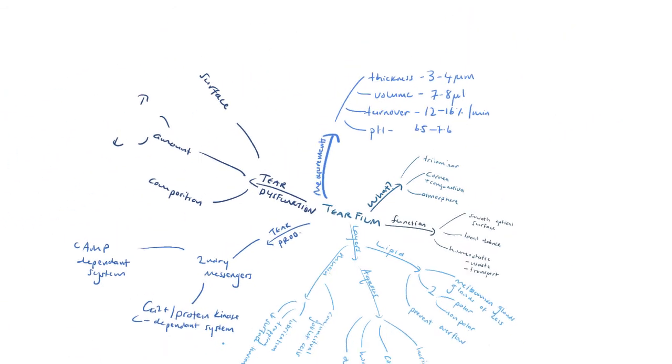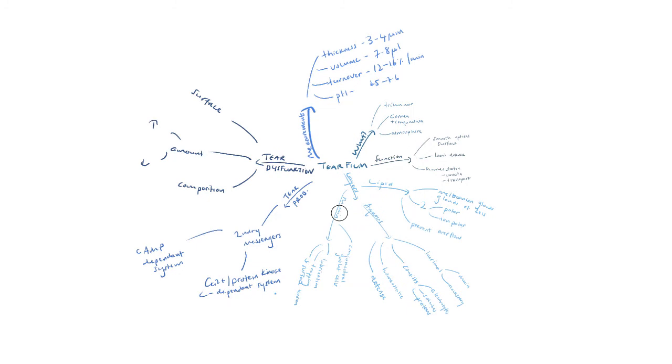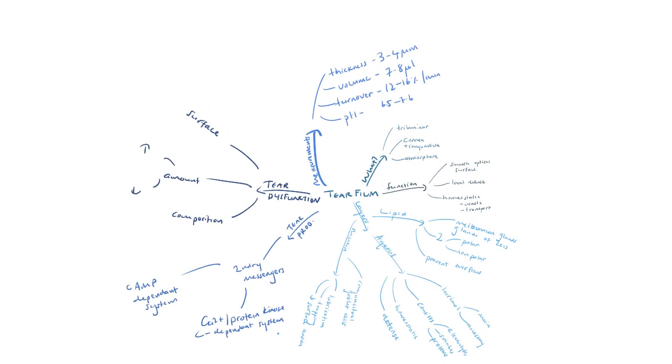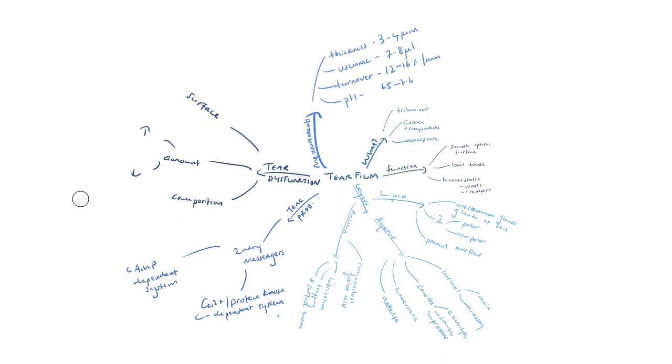So this completes the lecture of the tear film. This is the mind map that we've made. This is available for download. If you would like it, there is a link to download this one. So if you've enjoyed this, please like and subscribe to my channel. You can request other lectures. And thanks for listening. I hope you've learned something.